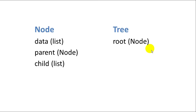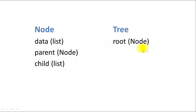When we implement our tree, we're going to have a node class. A node will have a list of data, a pointer to its parent node, and a list of child nodes. The tree class really just has a root node, which it uses to reach every other node in the tree.